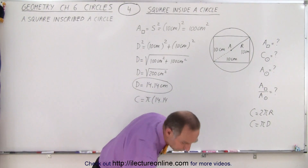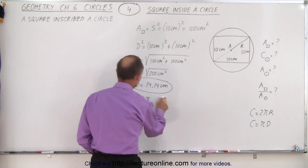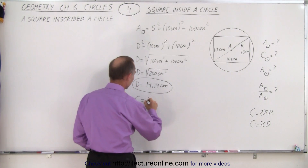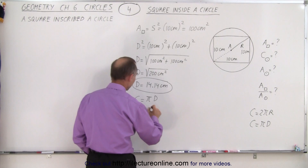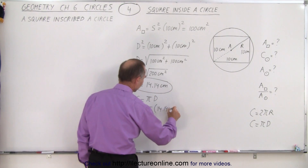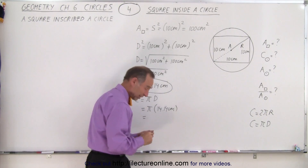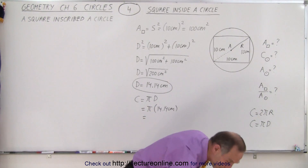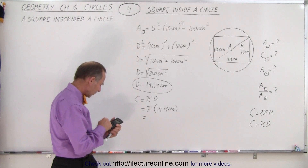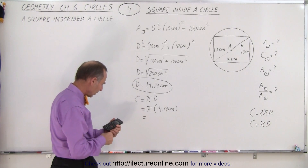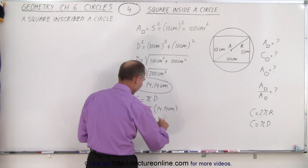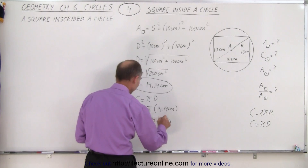The circumference is equal to π times the diameter. In this case that's π times 14.14 centimeters. Using a calculator, we take 14.14 times π and we get 44.4 centimeters, which is the circumference of the circle.